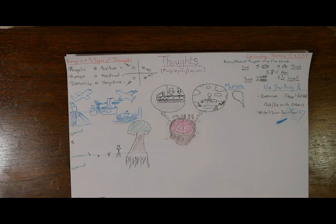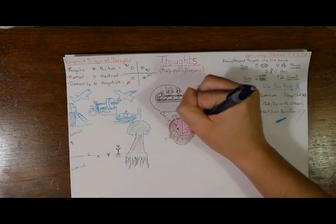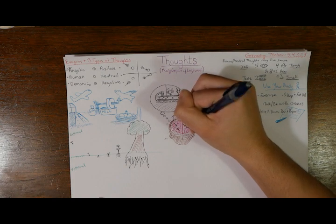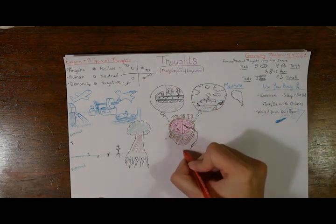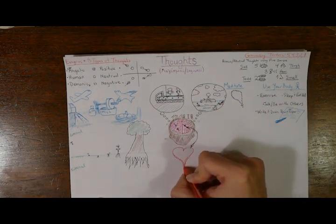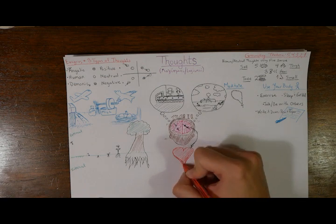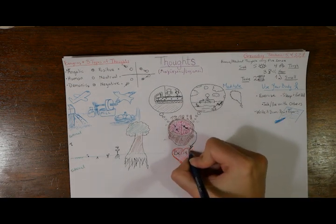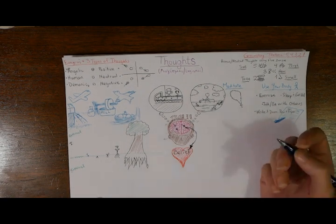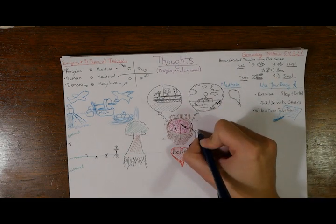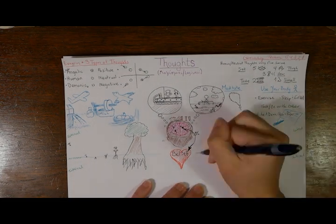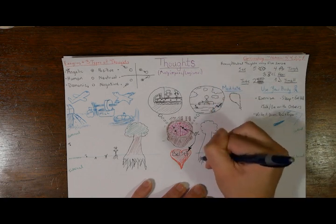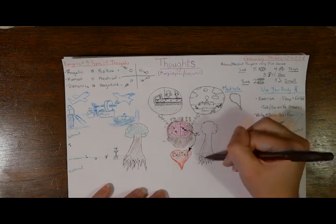Every time we interact and think on a thought, a connection is made between one neuron to another in our brain. The more we think a specific thought, the stronger that neural pathway becomes until it can grow into a full-fledged belief. Having positive and neutral beliefs is great, but the difficulty comes in when you find yourself in a negative forest.